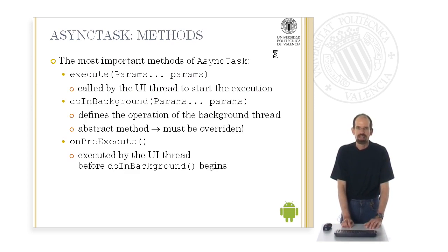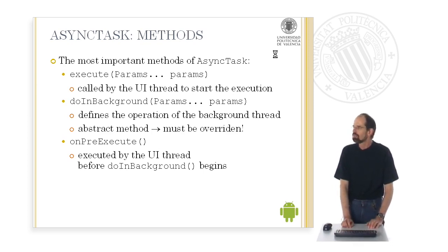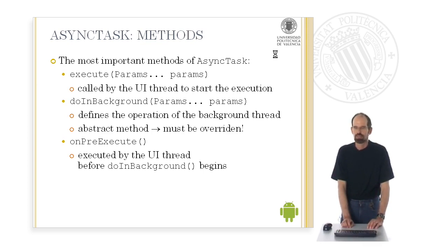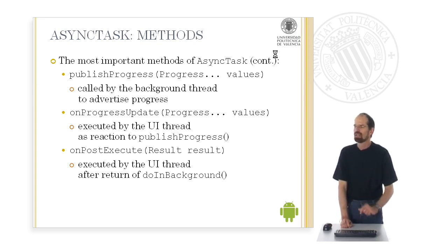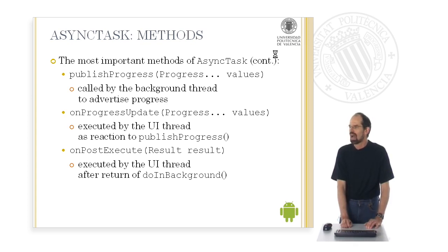The most important methods of AsyncTask are the following. The execute method is called by the user interface thread to start the execution; it takes parameters of type Params. doInBackground with the same parameter type defines the operation of the background thread — it is abstract and must be overridden. onPreExecute is executed by the user interface thread before doInBackground begins. publishProgress is called by the background thread to inform about its progress, and in response onProgressUpdate is executed by the user interface thread. Finally, onPostExecute is executed by the user interface thread after doInBackground has returned.